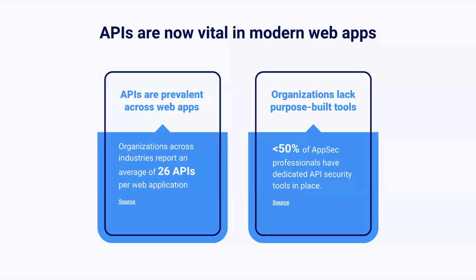In combination with that, less than 50% of application security professionals actually have dedicated API testing tools in place. So it's a bit of a combination of two problems: having visibility across the web application portfolio with that increasing number of APIs, and actually having effective tools that are specifically designed to test them. For those customers who haven't addressed those issues yet, we're only really increasing the risks.